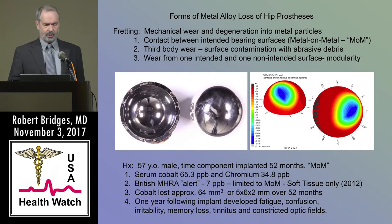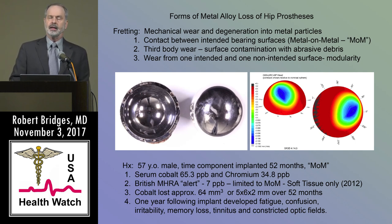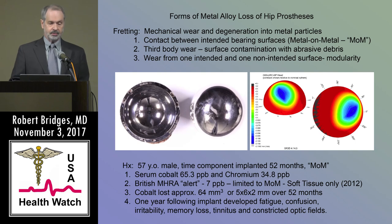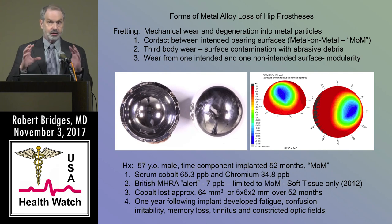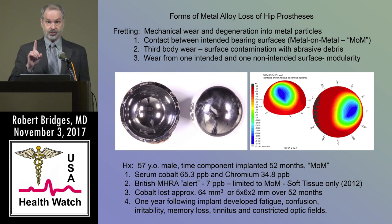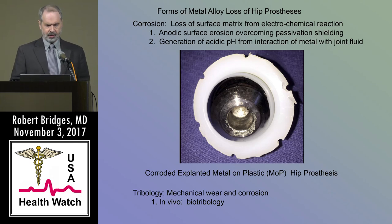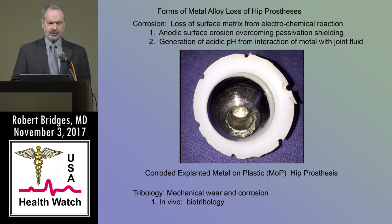The types of metal loss: the mechanical type is called fretting. One individual from Britain, 57 years of age, had the implant for 52 months. Within one year of implant he developed confusion, irritability, memory loss, tinnitus, and constricted optical fields. His cobalt level was 65 — remember, the threshold is one part per billion. You can also get metal loss from direct corrosion from an anodic surface erosion or from high pH. When you put the mechanical and corrosion factors together it's called biotribology.